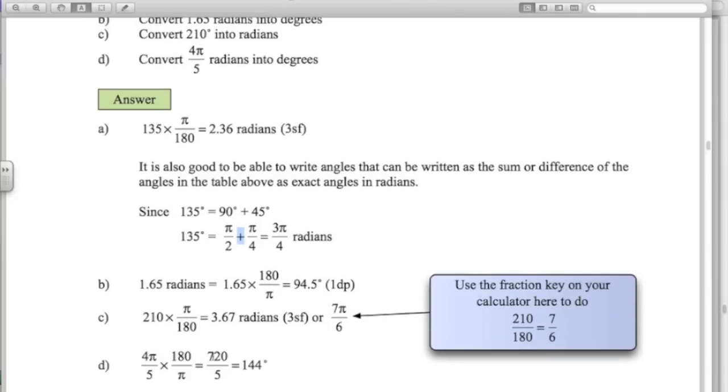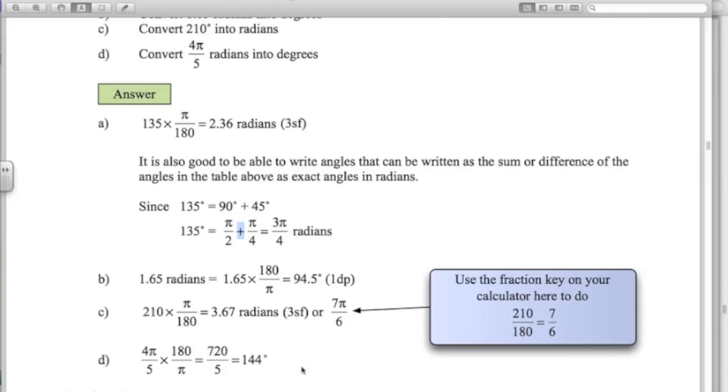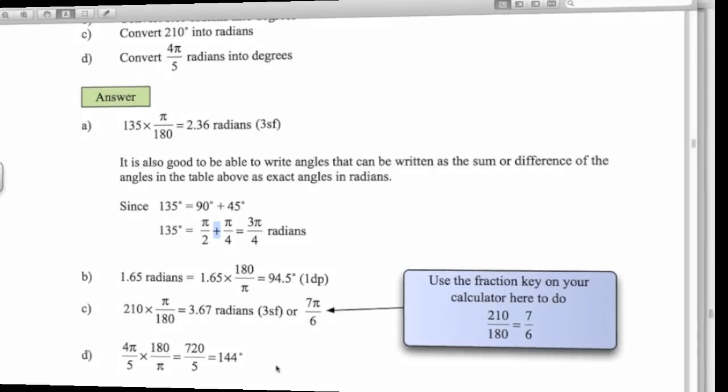And 4 pi over 5 times 180 over pi, to convert that into degrees, we get 144 degrees. Very simple, converting these angles from degrees to radians.